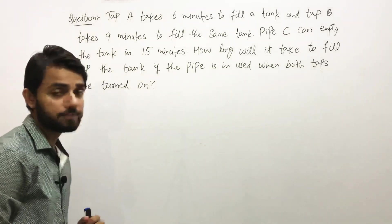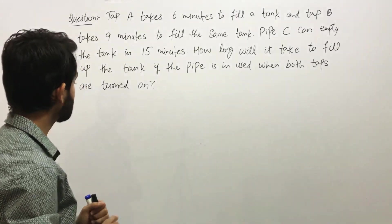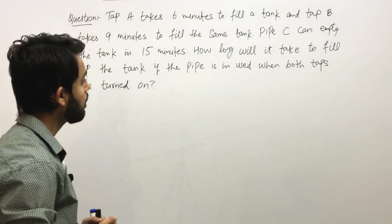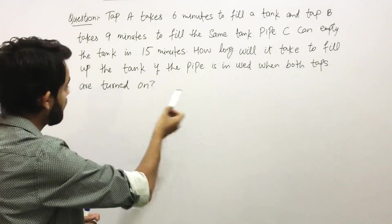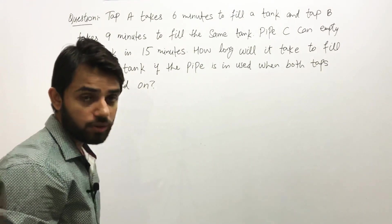The question says: Tap A takes 6 minutes to fill a tank and Tap B takes 9 minutes to fill the same tank. Pipe C can empty the tank in 15 minutes. How long will it take to fill up the tank if the pipe is in use when both the taps are turned on?